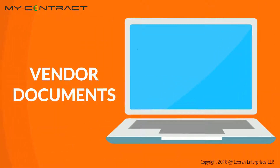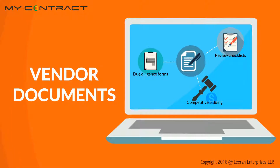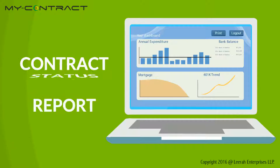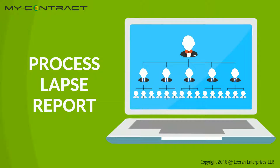Vendor documents such as due diligence forms, competitive bidding papers, and review checklists are saved along with the main contract and are available with the click of a button. Monthly and yearly contract status reports, audit reports, and process lapse reports are sent to all users including senior management to ensure transparency.